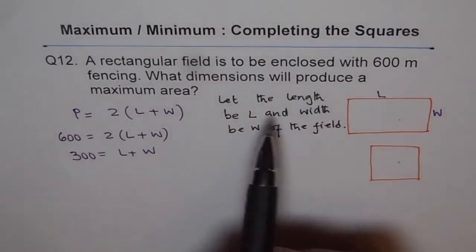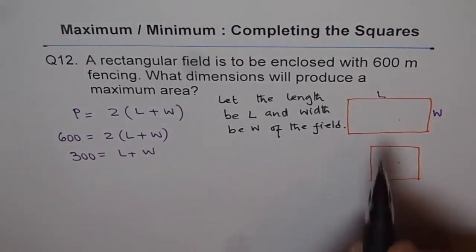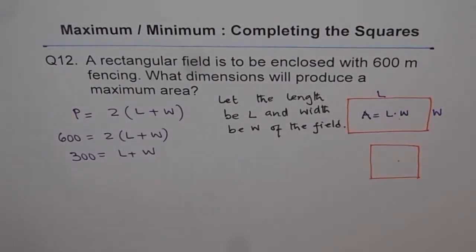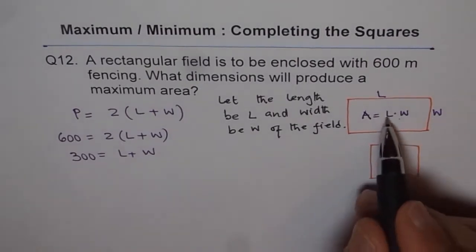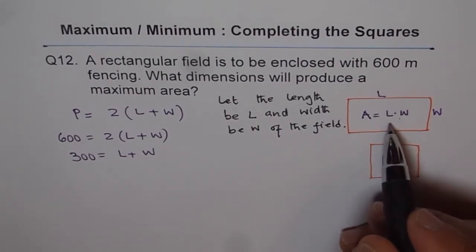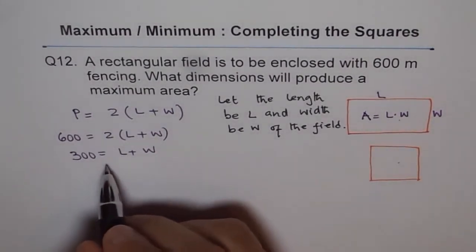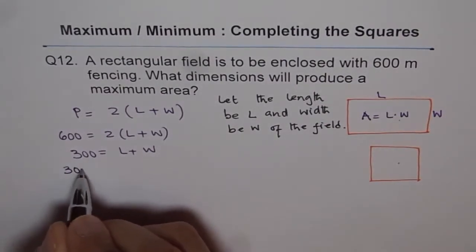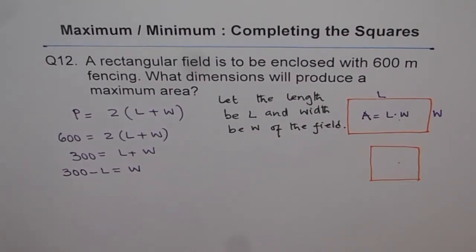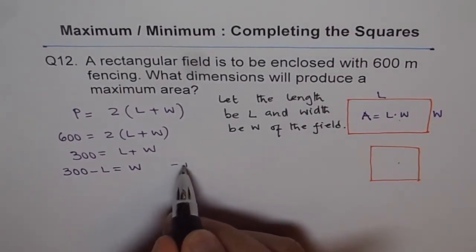What dimensions will produce maximum area? Area equals length times width. We have two variables, and solving for two variables is difficult, so it's better to write one variable in terms of the other. From 300 = L + W, we get W = 300 minus L. We'll call this equation number 1 — it relates width with length.